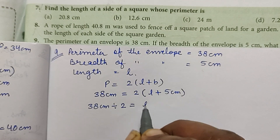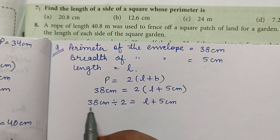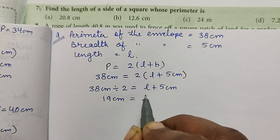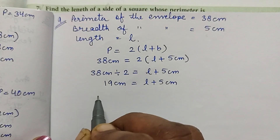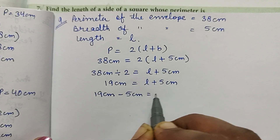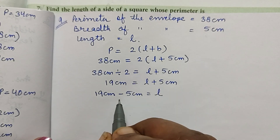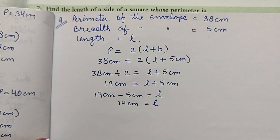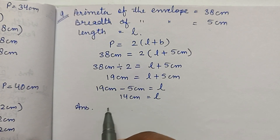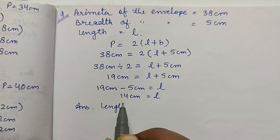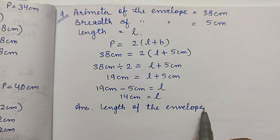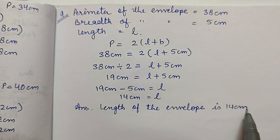Dividing 38 by 2 gives 19 cm, equal to l plus 5 cm. Therefore, 19 minus 5 equals 14 cm, so length equals 14 cm. The length of the envelope is 14 cm.